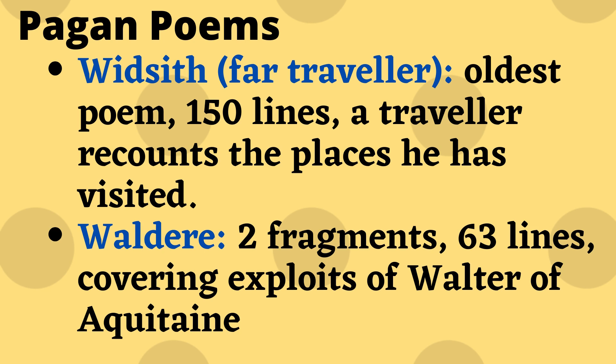After Beowulf, we have some pagan poems written during the Old English period. Poem No. 1, Widsith, which means 'a far traveller.' This poem is usually considered to be the oldest poem in the language and consists of nearly 150 lines of verse. This poem is all about a traveller who recounts the places he has visited and the people he has met during his travel.